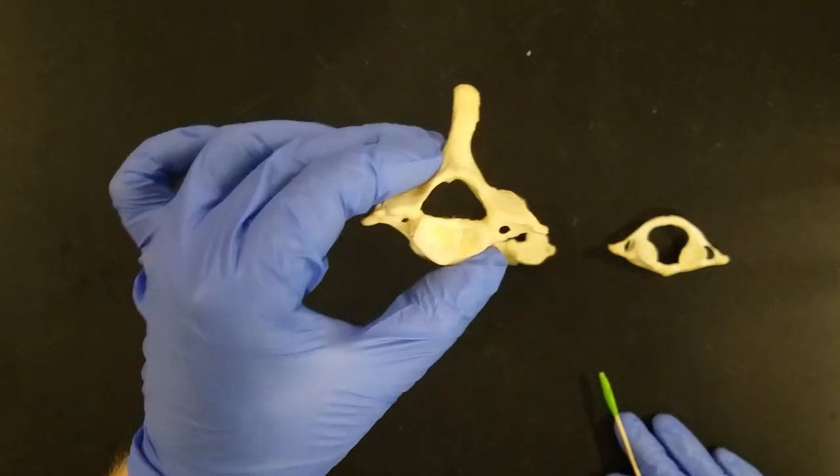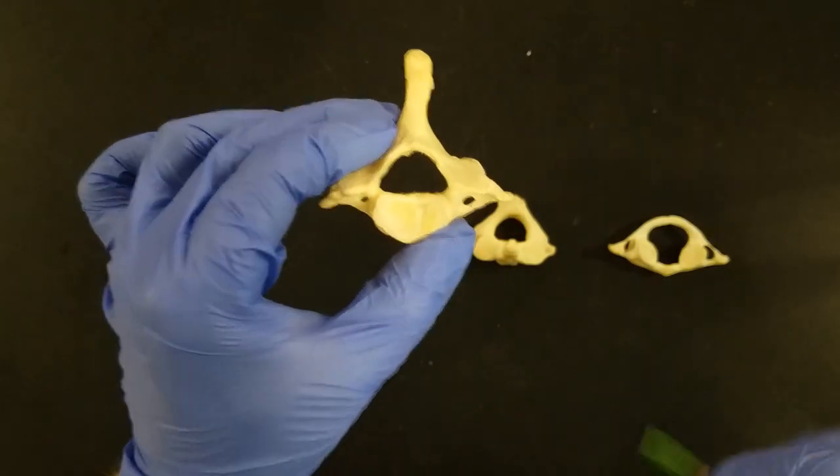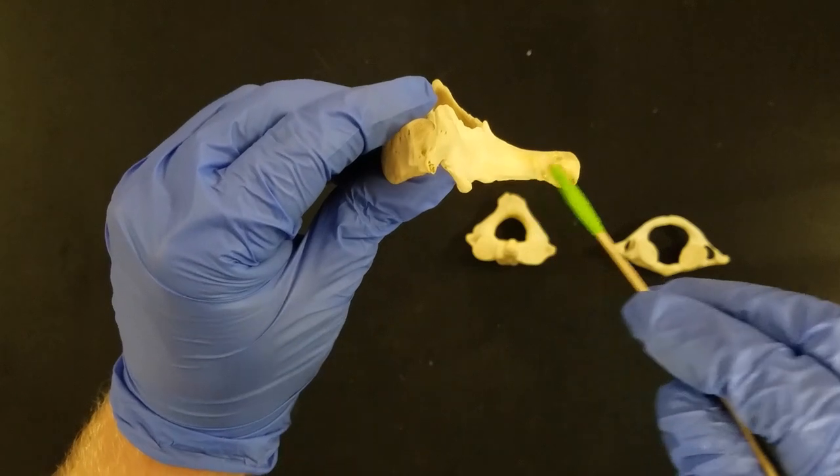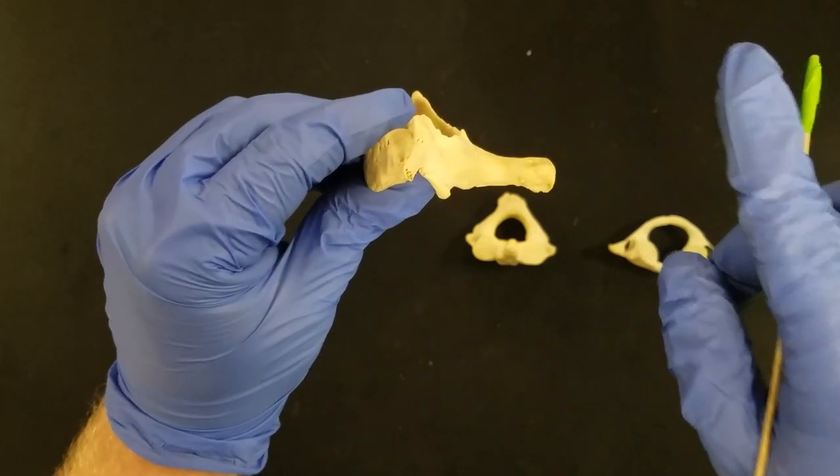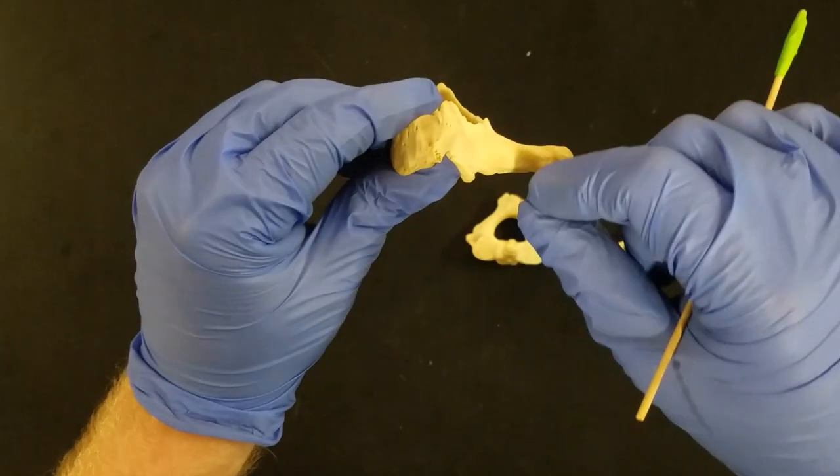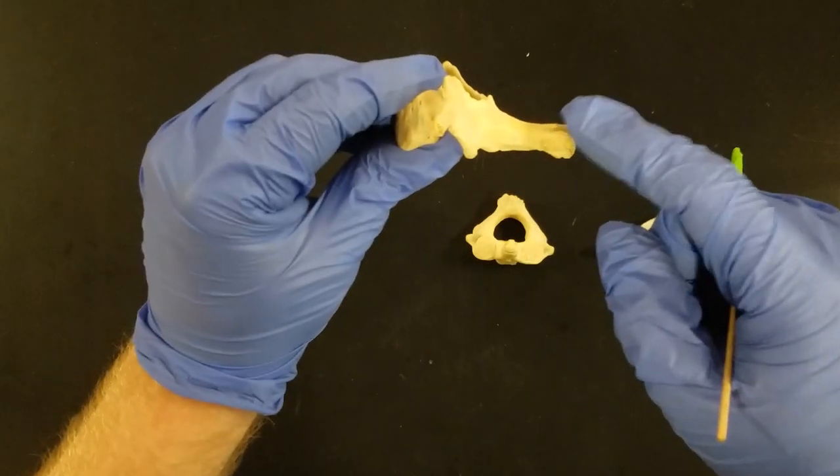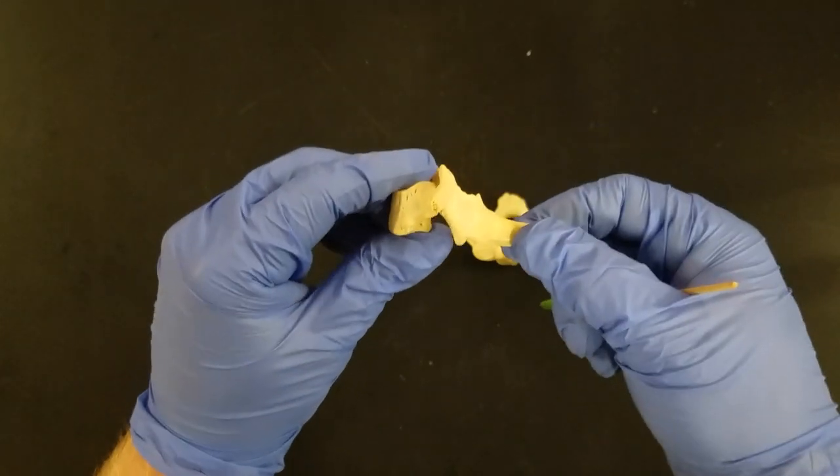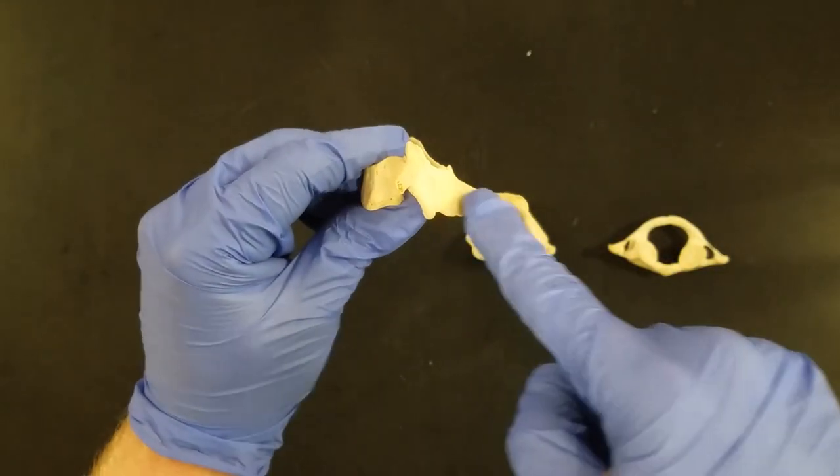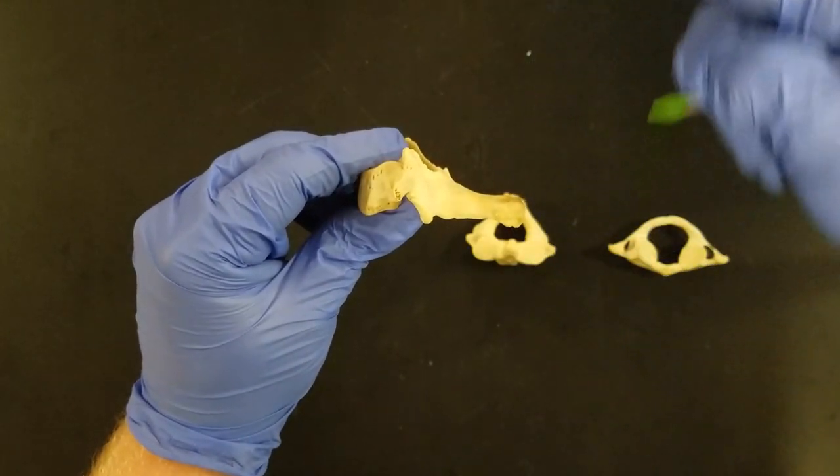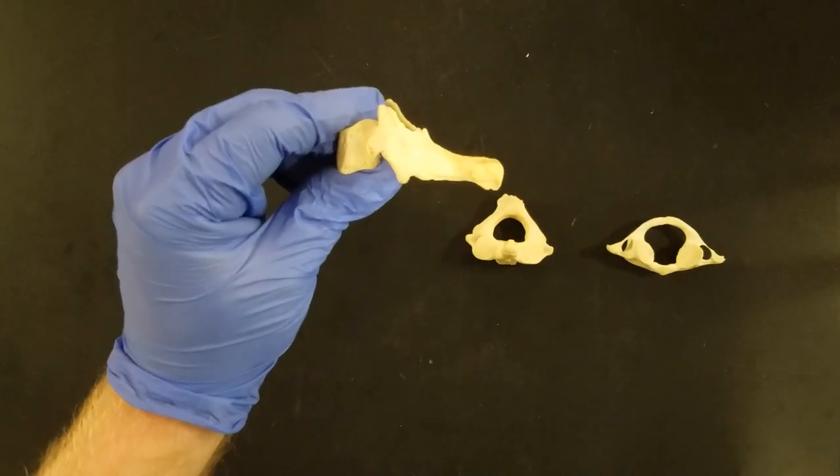Now you don't have to know this vertebrae for lab. But the reason I always like to point it out, this very long spinous process forms a bump at the base of your neck. So if you touch your neck on the back, you'll notice that big bump sticking out. That's the spinous process of C7. That's useful because when we take x-rays, this clearly shows up on the side view. So you can count up or count down on the vertebrae.